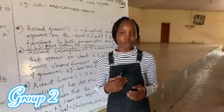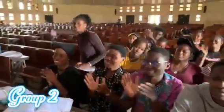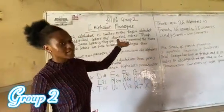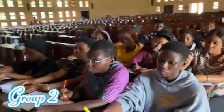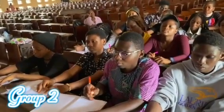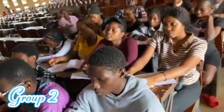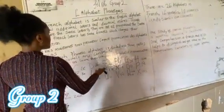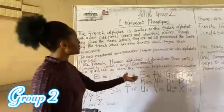I will now hand over to my co-group member to take on the next part. The French alphabet is similar to the English alphabet, with a few additional letters and diacritical marks. Though they share the same letters, they are not all pronounced the same way — the French letters have accents which change their pronunciation. I will be introducing the aspect of pronunciation in the French alphabet. The French phonetic alphabet is divided into three parts: alphabets, vowels, and consonants. Let us learn the French alphabet pronunciation. Répétez après moi.